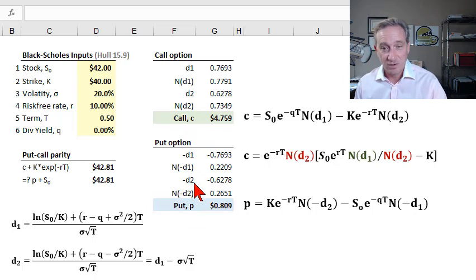We want to keep in mind, small c, small p, that denotes European. This is an option that can be exercised only at maturity if there is positive intrinsic value. We're getting $4.80 for the call and about $0.81 for the put.